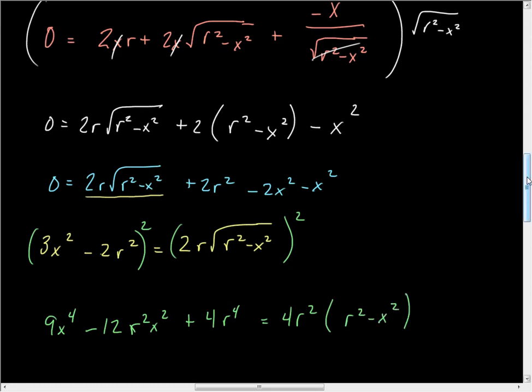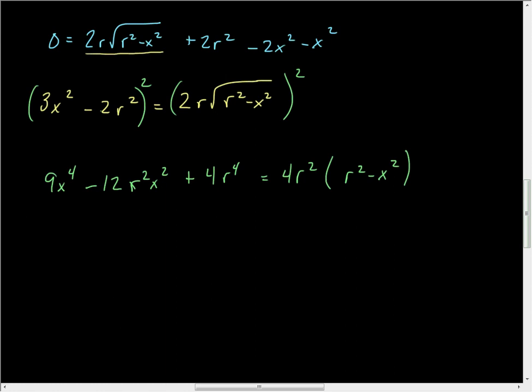Oh, finally, I like this answer. 9X to the fourth minus 12R squared X squared plus 4R to the fourth is equal to 4R to the fourth minus 4R squared X squared.